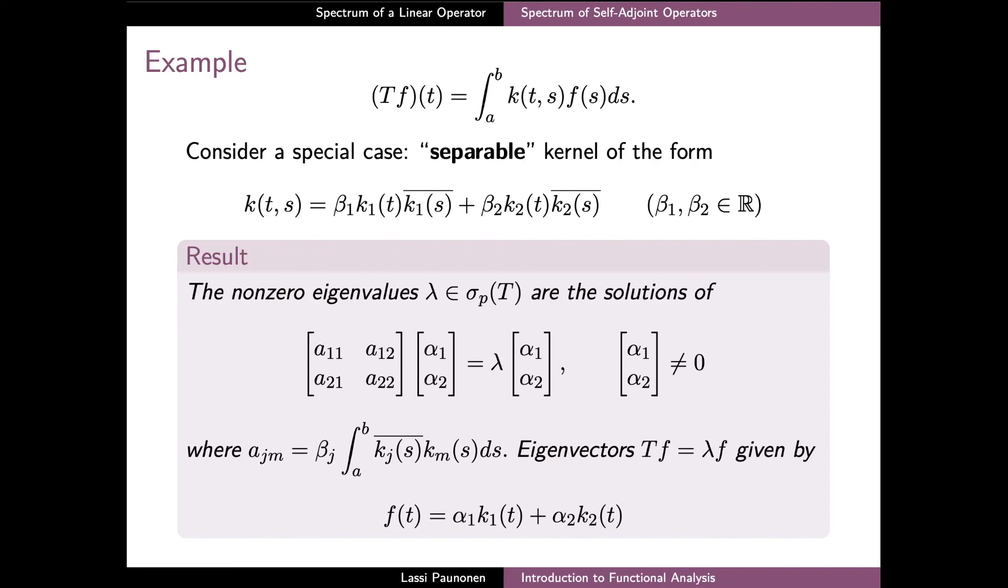it's possible to compute the non-zero eigenvalues and eigenvectors of T explicitly. Indeed, these eigenvalues can be solved from a finite dimensional eigenvalue problem with a 2×2 coefficient matrix and the elements of this matrix, a_jm,